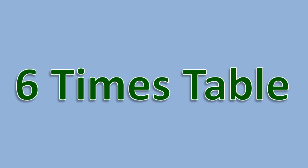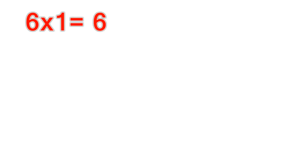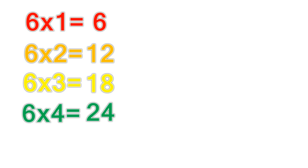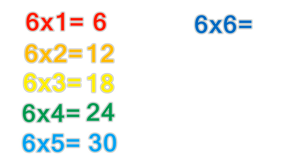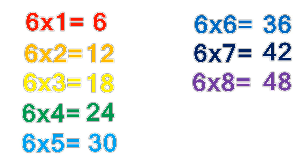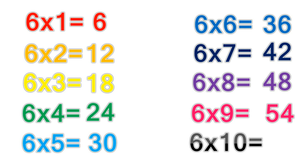6 times table. 6 times 1 equals 6. 6 times 2 equals 12. 6 times 3 equals 18. 6 times 4 equals 24. 6 times 5 equals 30. 6 times 6 equals 36. 6 times 7 equals 42. 6 times 8 equals 48. 6 times 9 equals 54. 6 times 10 equals 60.